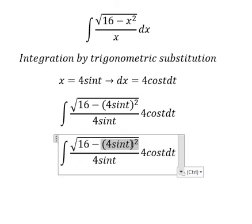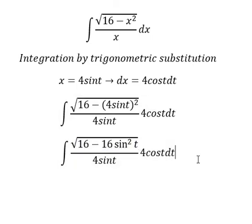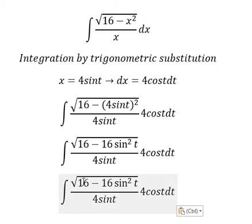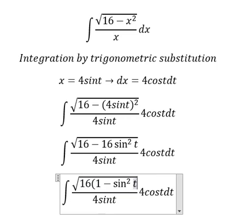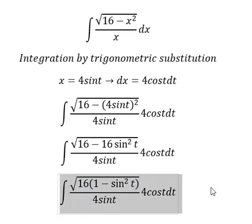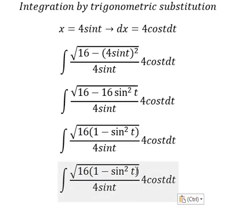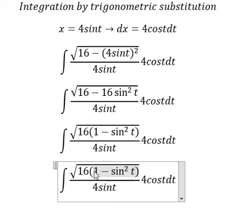So this one equals 16 minus 16 sine squared t. Number 16 and number 16 we can do factorization, and this one we change to cosine squared t.